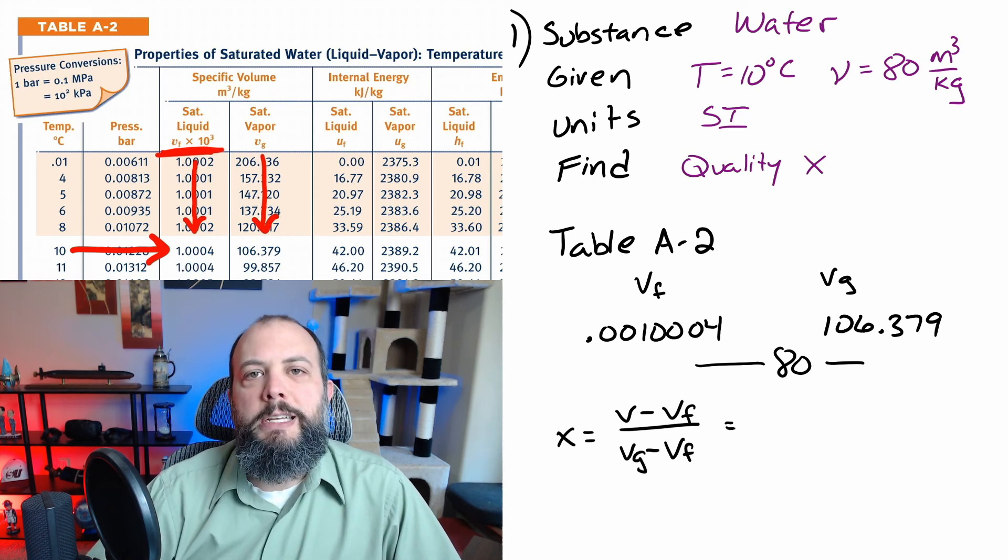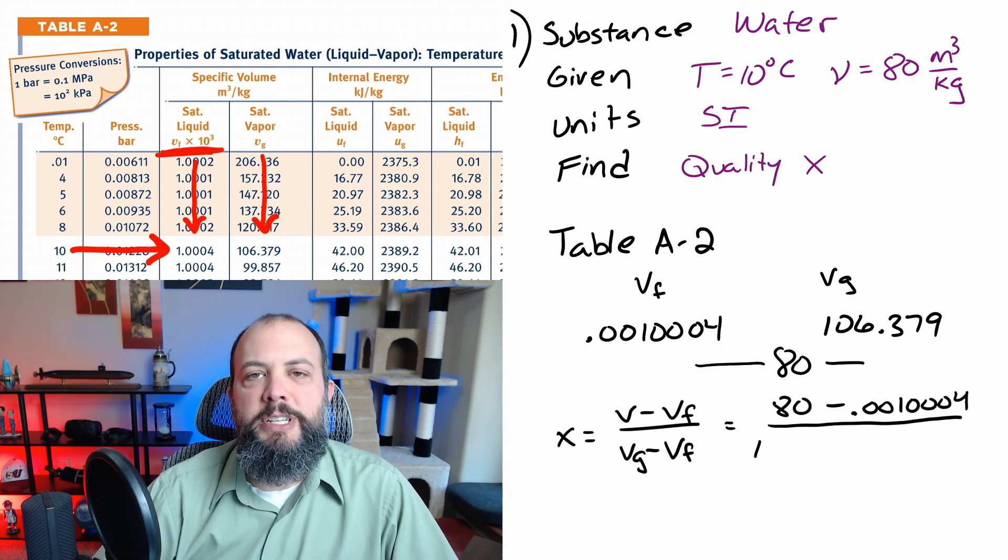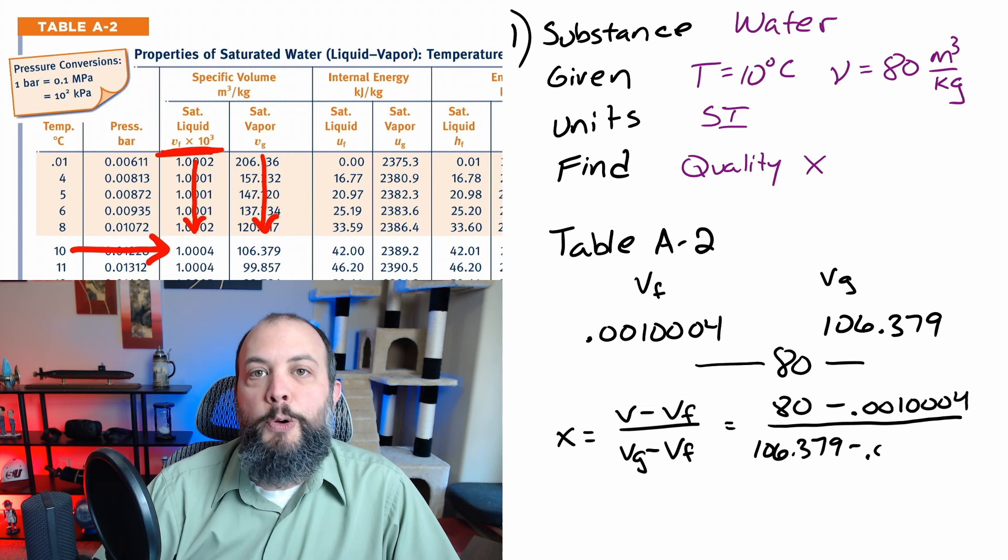Your numerator is going to show how high your specific volume is above the specific volume for the fluid and your denominator is the total difference between specific volume for the gas and specific volume for the saturated fluid. You should always get a number between 0 and 1 for quality.